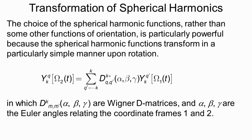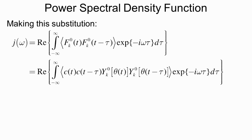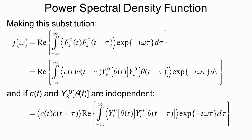If we have a vector represented with polar angles omega sub 1 and rotate the coordinate system or the object, we can represent the new spherical harmonics as a summation over index q in which the coefficients are the Wigner D matrices. Importantly, we only need to sum over q, not over k. So if we have spherical harmonics of a particular rank, when the object rotates, we don't mix together different ranks. This makes spherical harmonics a particularly simple set of functions for characterizing orientation. Making the substitution for the F's, we then have the autocorrelation function of the products of the c's and the spherical harmonics.